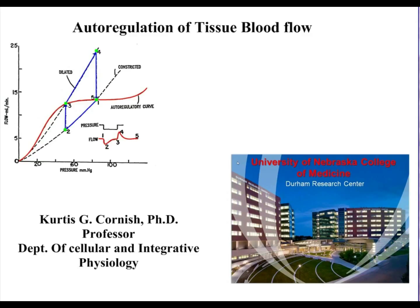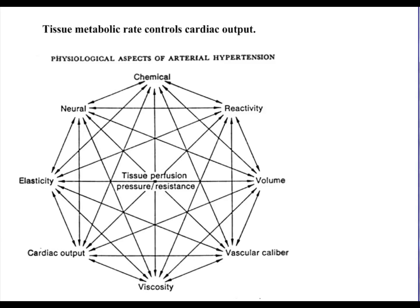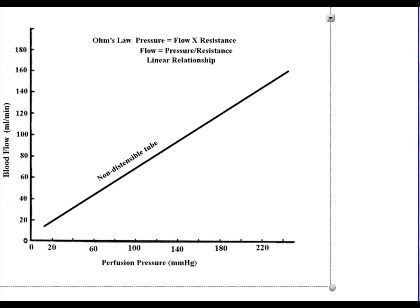I'm Dr. Curtis Cornish and I'd like to talk to you today about the autoregulation of blood flow. Tissues do control their own blood flow and we're going to talk about how they do that. There are a lot of things that are involved in the control of blood flow, but the important point is that all of them intersect at the perfusion of the tissues. Long term, the tissues control their own blood flow.